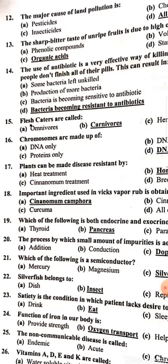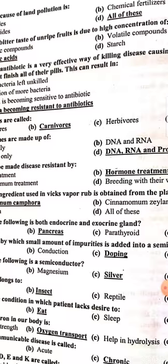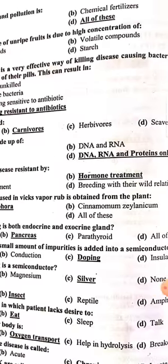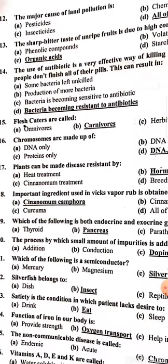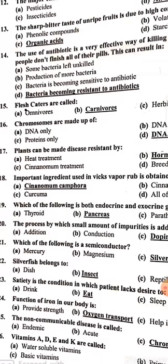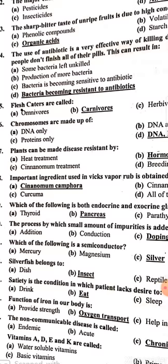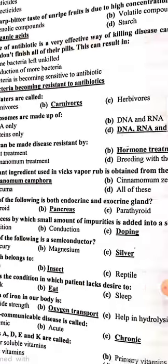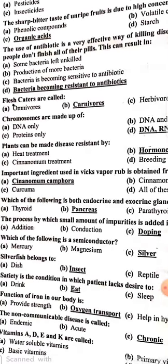Chromosomes are made up of DNA, RNA, and protein. Plants can be made disease-resistant by hormone treatment. An important ingredient used in vapor rub is obtained from the plant Cinnamomum camphora.